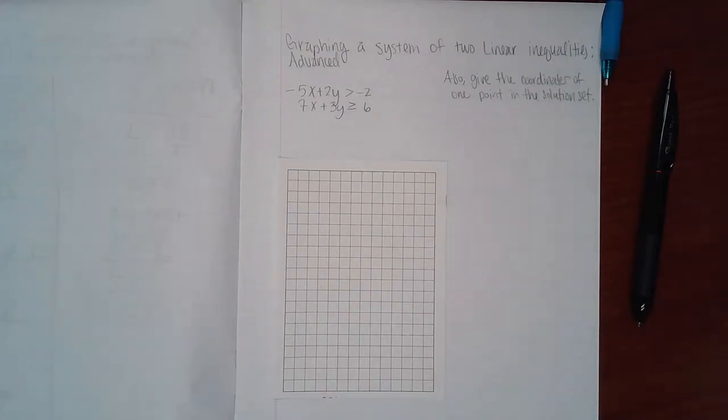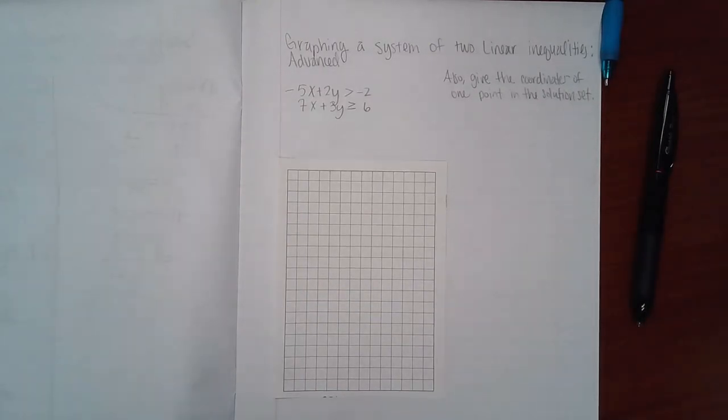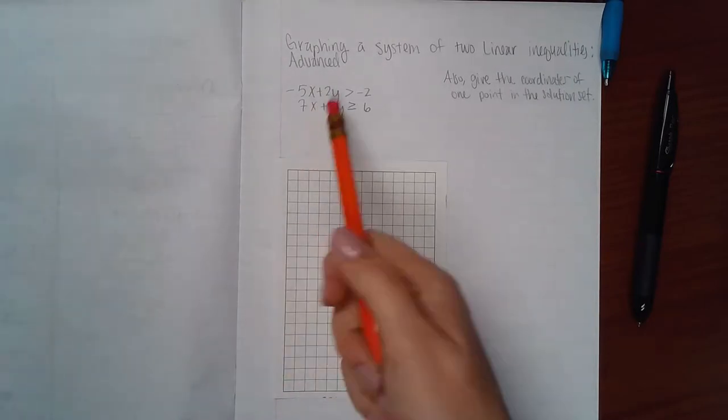This is graphing a system of two linear inequalities. In this section, we're going to graph two inequalities and then shade the solution.